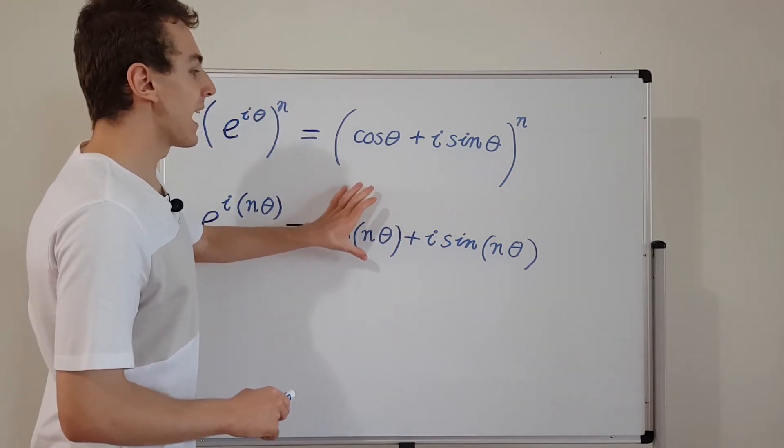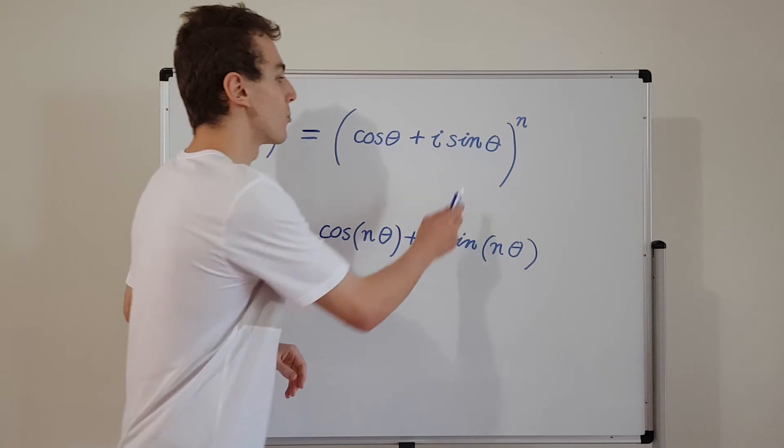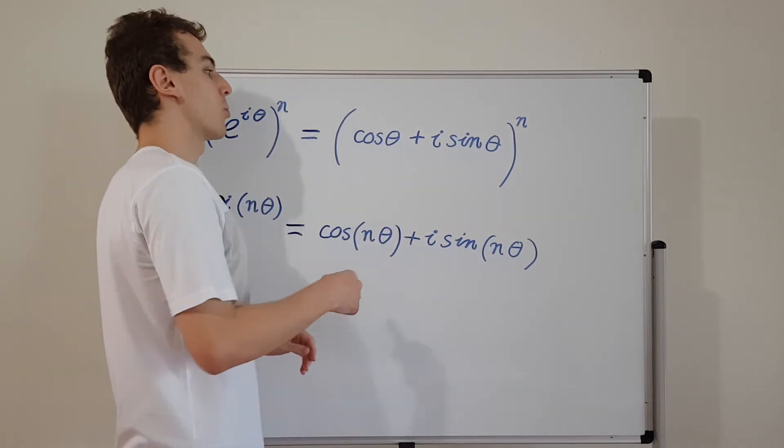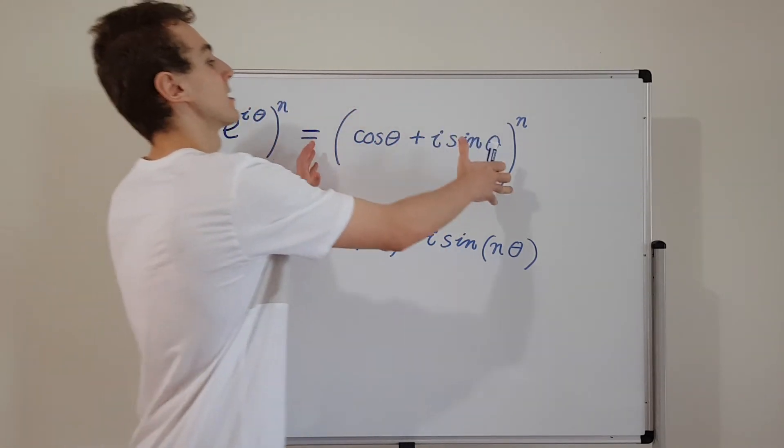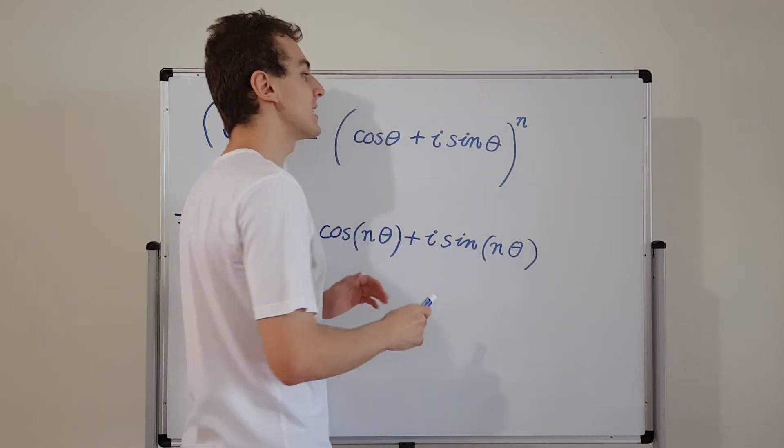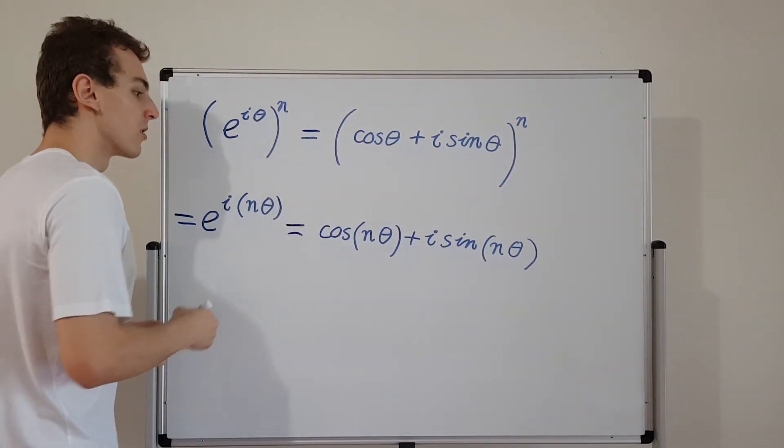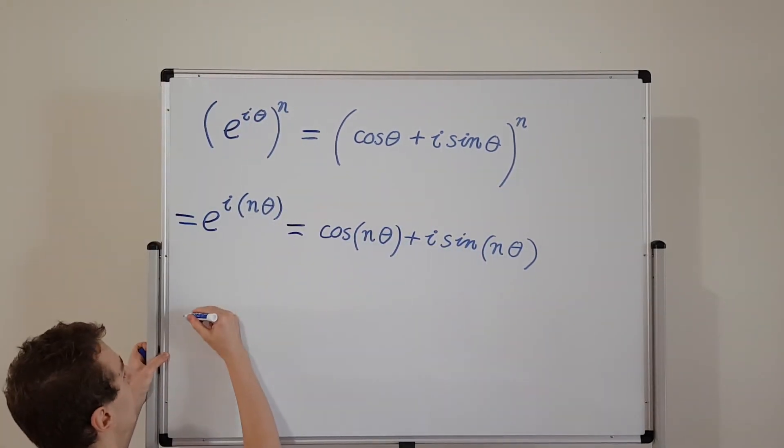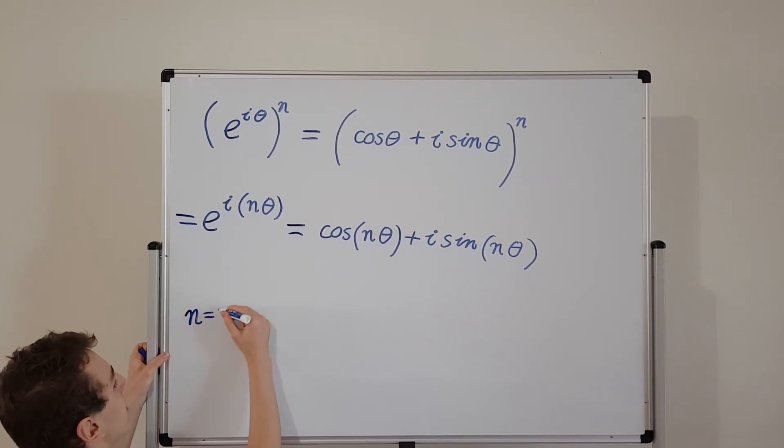And we've actually seen one special case of de Moivre's theorem in an earlier video when we were talking about squaring this, when we had a square here and we actually set n equals to 2. For the case where n equals 2, we actually have this. We'll write down the expression.